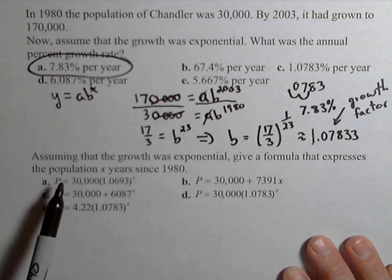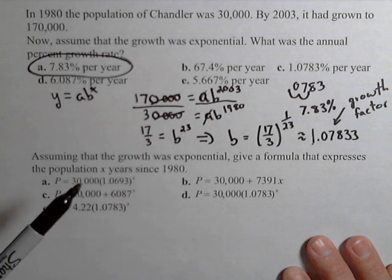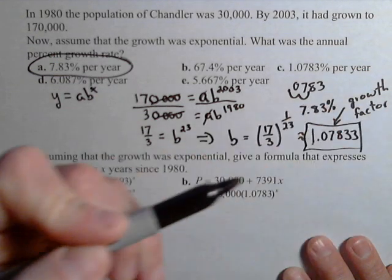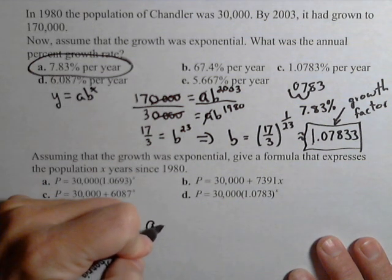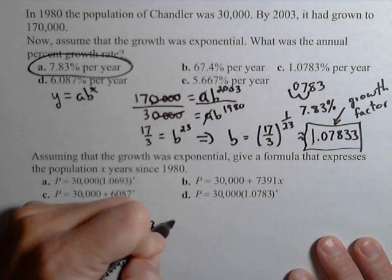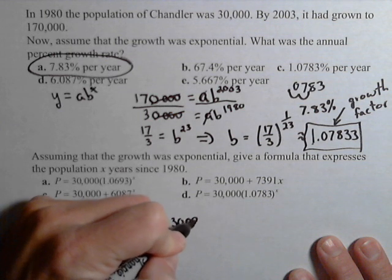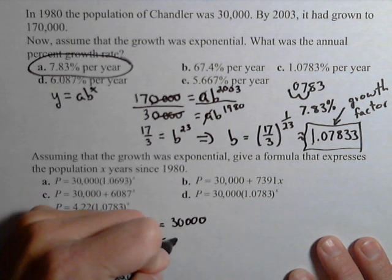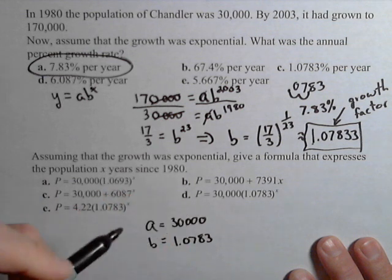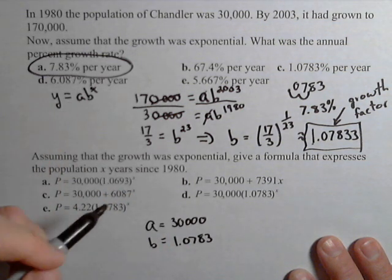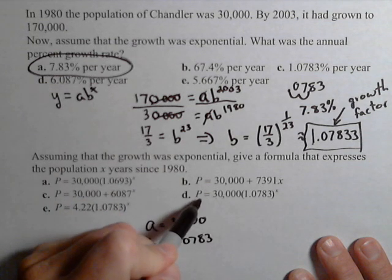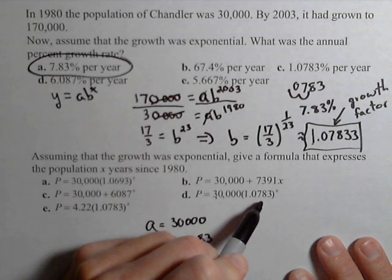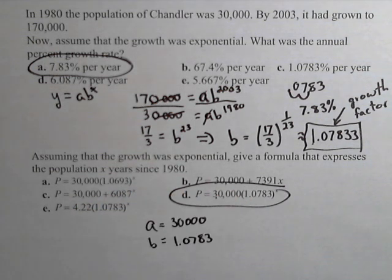Now, to give a formula as x is the number of years since 1980, we have our base b, or our growth factor, so that's the part that gets raised to the x. We need our a - well, we're using 1980 as our initial, so 30,000 is our initial. Our base is 1.0783, so putting it into this model here, we have y equals, or P equals in this case, 30,000 times 1.0783 to the x, and there's our model.